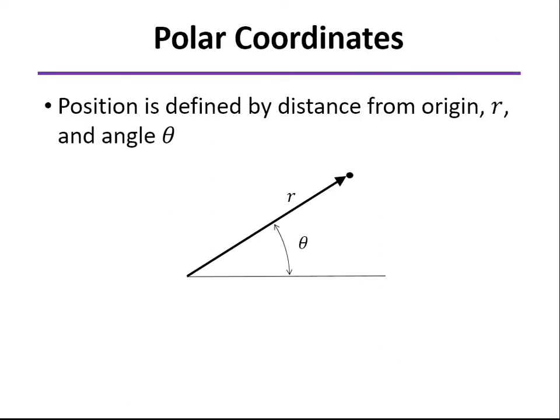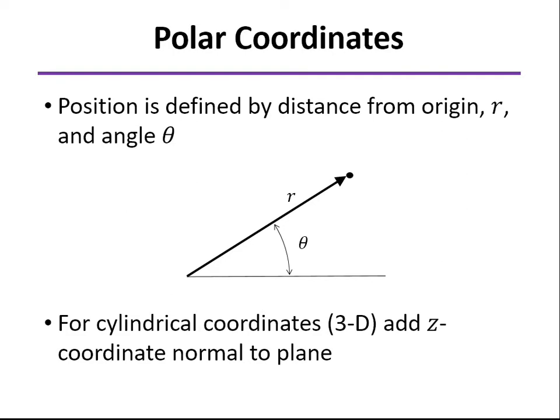We define a particle's position by its distance away from the origin and by an angle theta measured from some reference, usually the horizontal, but doesn't have to be. And we add the z-coordinate normal to this plane that contains theta and r to make that the third dimension.